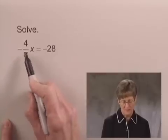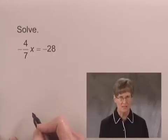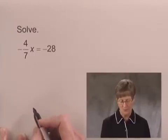The reciprocal of negative 4 sevenths is negative 7 fourths, and that's the number we'll use to multiply by on both sides of the equation.